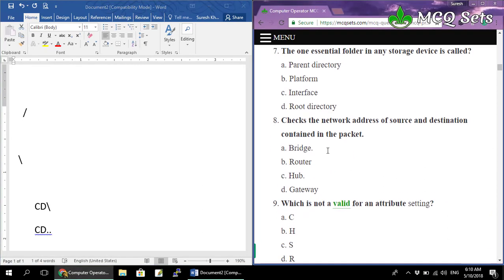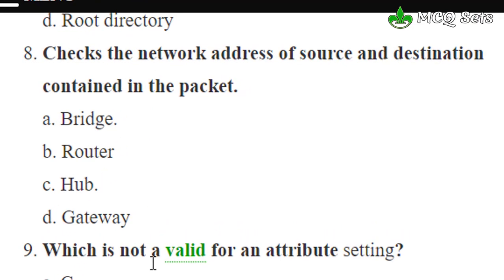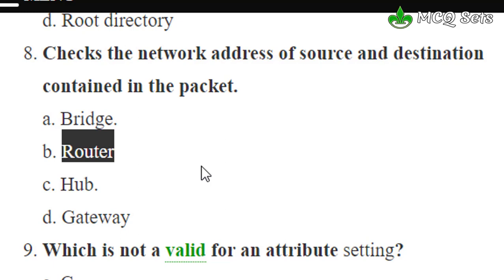Question eight: which device checks the network address of source and destination contained in packets? A device that checks the physical address and forwards data in a network is a bridge or switch. However, if a device checks the network address — which is the IP address — and determines the best route for a packet, that device is a router. It is a Layer 3 device in the OSI model, operating in the network layer. So router is the correct answer for question eight.